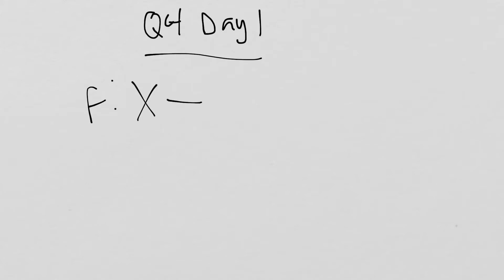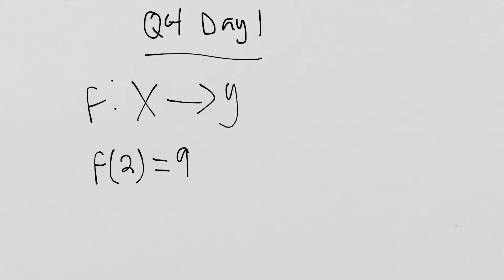We'll start with defining functions. If I have a function f, this notation is saying that I'm going to send an input x to an output y. So if I say f of 2 equals 9, this is some kind of math rule that's taking an input of 2, and there are math operations that happen to it, and then after those operations, we send that 2 to an output of 9.